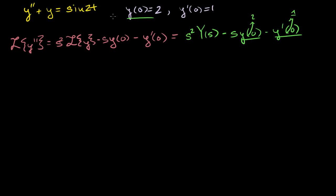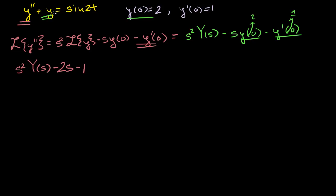So if we take the Laplace transforms of both sides of this equation, the Laplace transform of the second derivative is s squared times capital Y(s), minus 2s, minus 1. Then we take the Laplace transform of y by itself, which is just plus Y(s). It's good to get used to either notation.